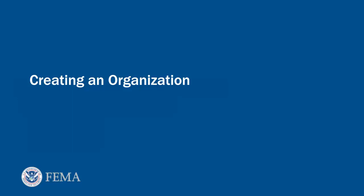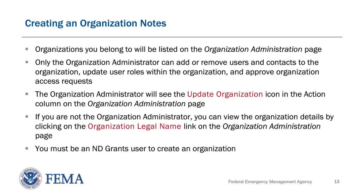Once you have created an ND Grants system user account, you must either request access to an existing organization or create a new organization. Now, you will learn how to create a new organization. FEMA requests that all applicants provide their organization's contact information. When creating an organization, please note that organizations you belong to will be listed on the Organization Administration page. Only the Organization Administrator can add or remove users and contacts to the organization, update user roles within the organization, and approve organization access requests. The Organization Administrator will see the Update Organization icon in the Action column on the Organization Administration page. If you are not the Organization Administrator, you can view the organization details by clicking on the Organization Legal Name link on the Organization Administration page.